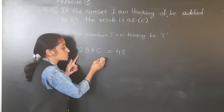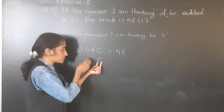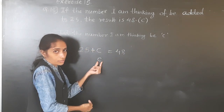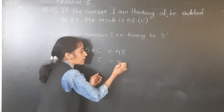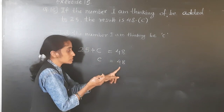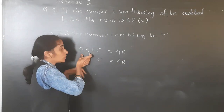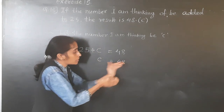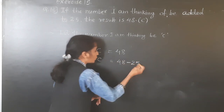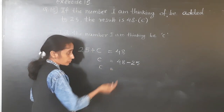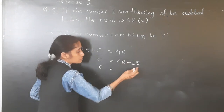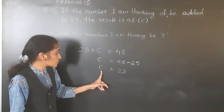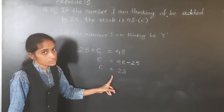We write C as it is, and 25 transfers to the right side. So: C = 48 − 25. 8 minus 5 is 3, 4 minus 2 is 2. So C = 23.